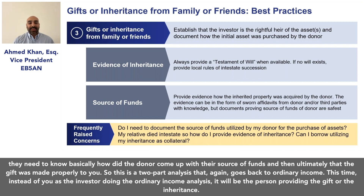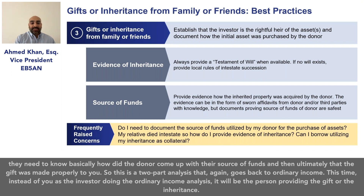This is a two-part analysis that goes back to ordinary income. This time, instead of you as the investor doing the ordinary income analysis, it will be the person providing the gift or the inheritance who must demonstrate it.